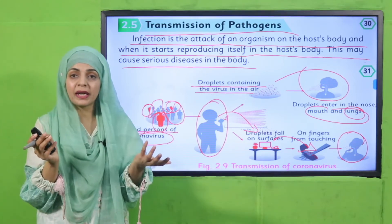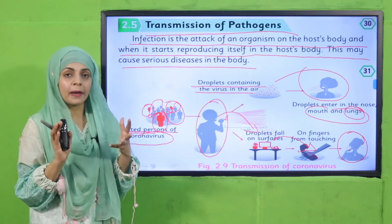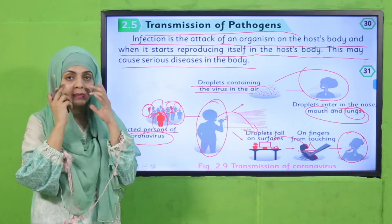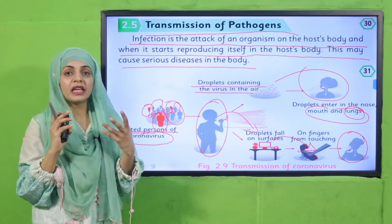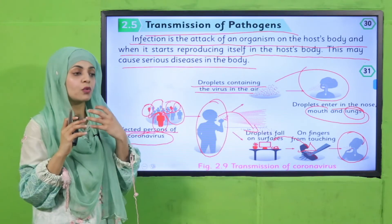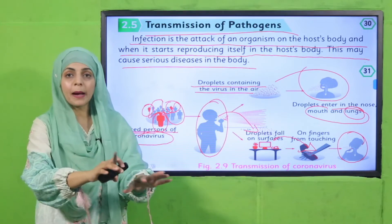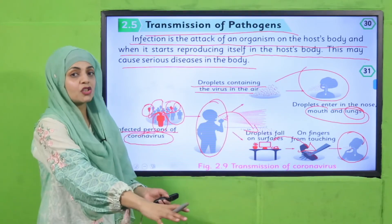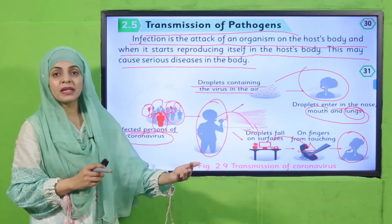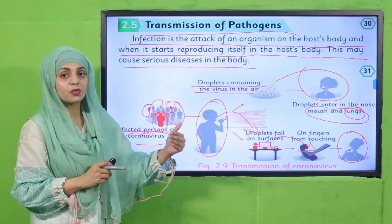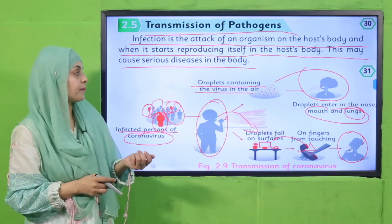This is how coronavirus enters a healthy body. That's why you wear a mask — to cover your nose. If a healthy person touches a contaminated place, they will also get coronavirus. And if you do not maintain a distance of six feet from the other person, you will most likely get affected.